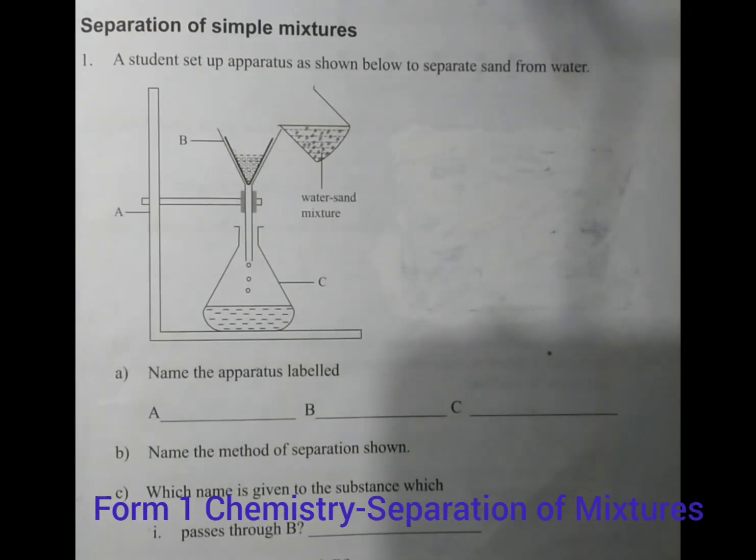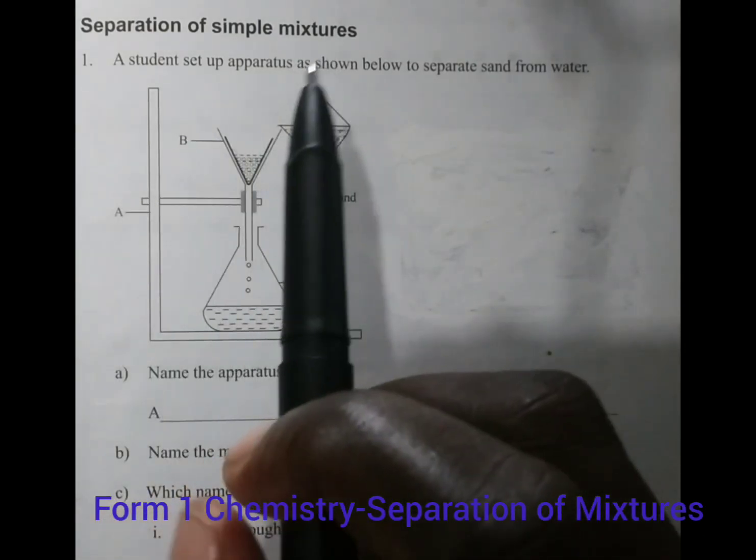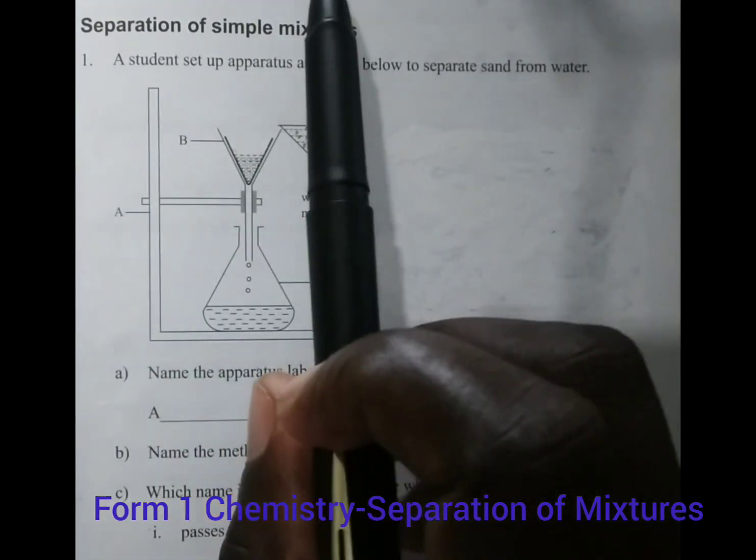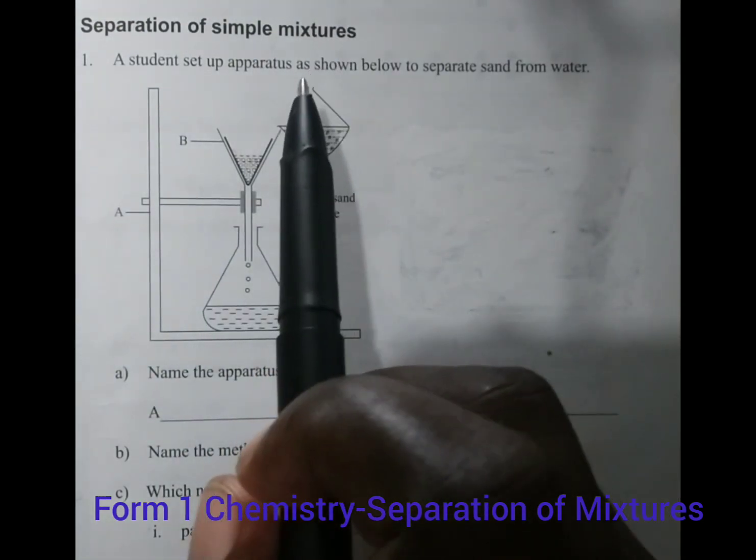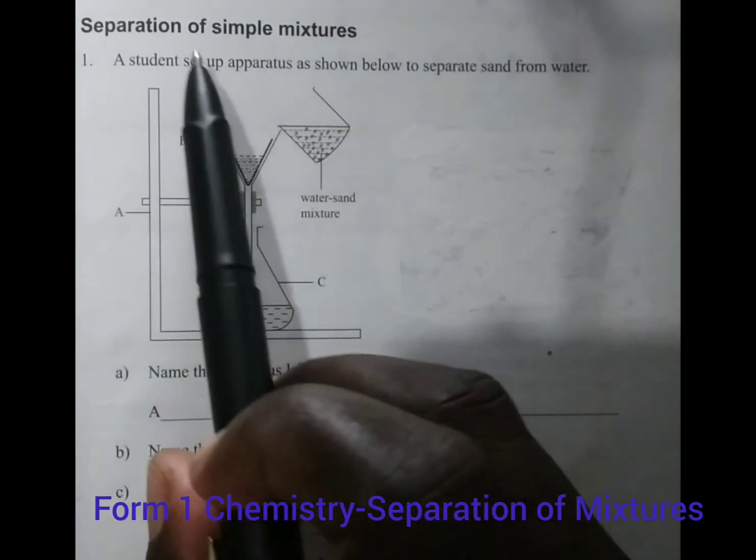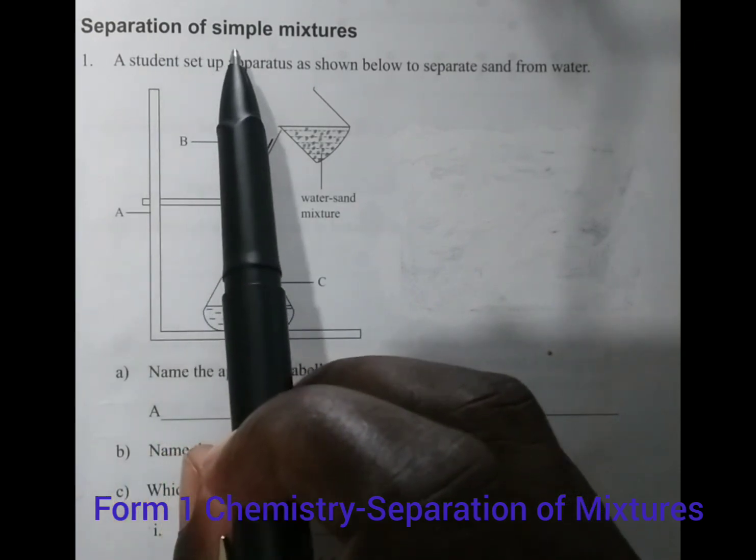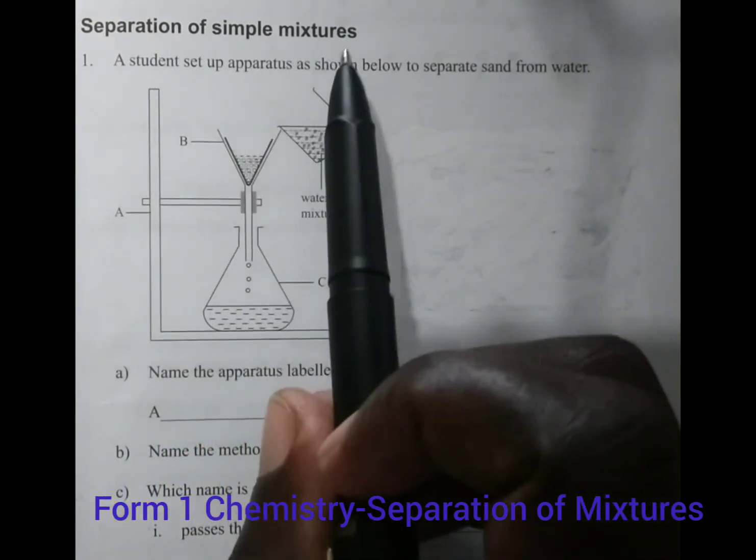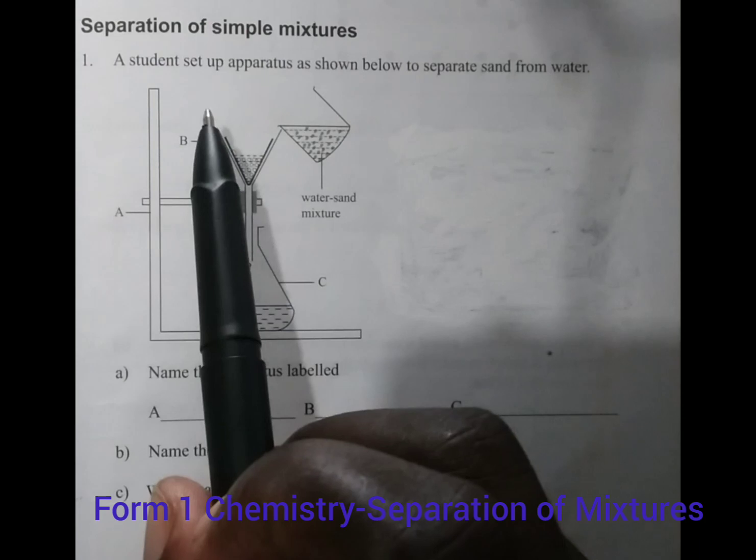Welcome back. We are looking at Chemistry Form 1 classification of substances. We are looking at methods of separating simple mixtures by considering a question below.